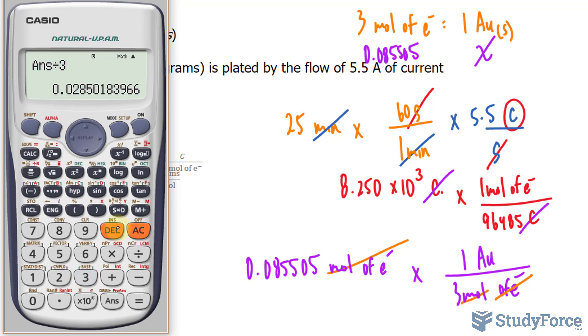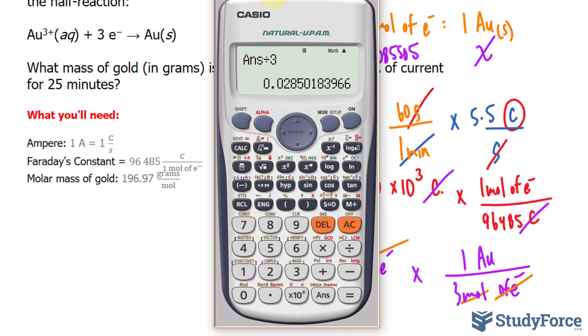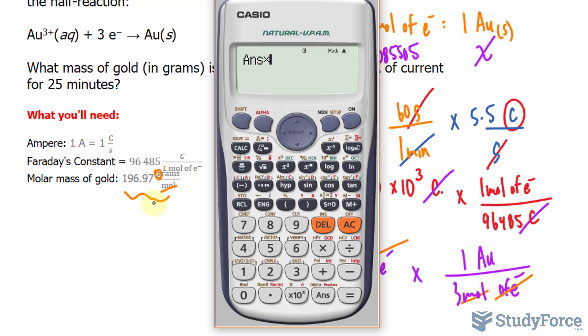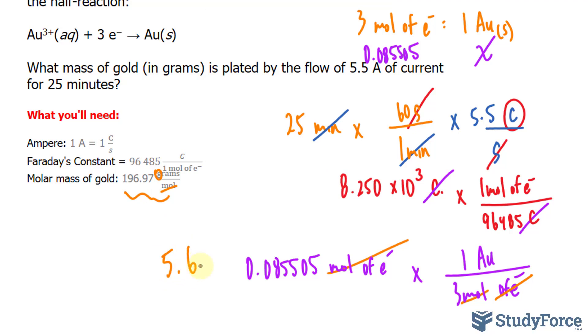We get a number that's even smaller and that's the amount of moles of gold. Using the molar mass of gold, as you can see on the screen now, by multiplying this number by this number, the mole unit will cancel out, leaving us with the amount of grams. So let's multiply this by 196.97, giving us the amount of gold that we need, which is 5.6 grams of gold.